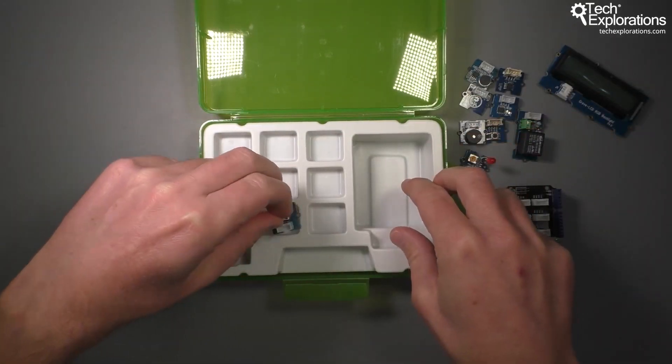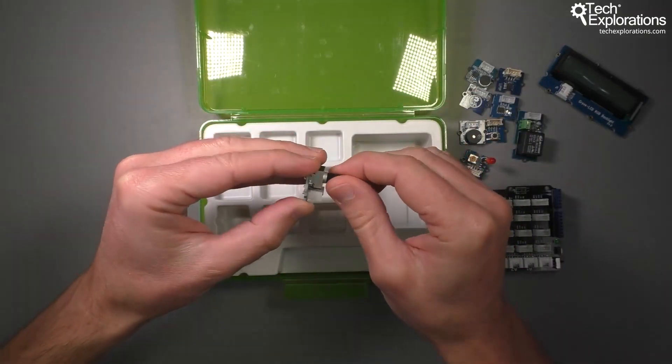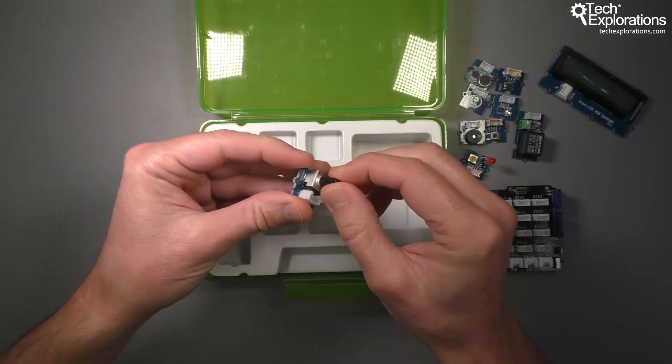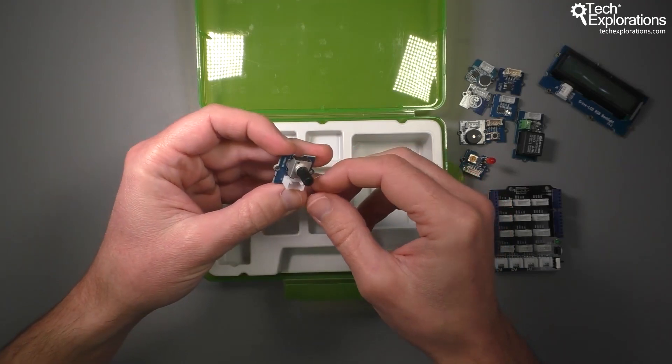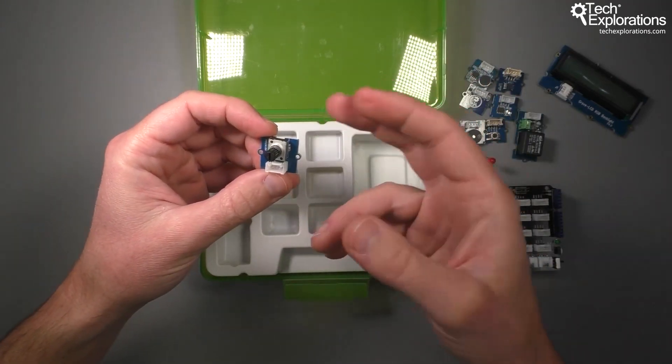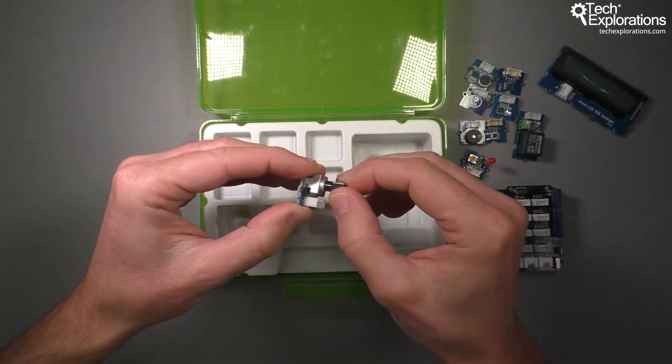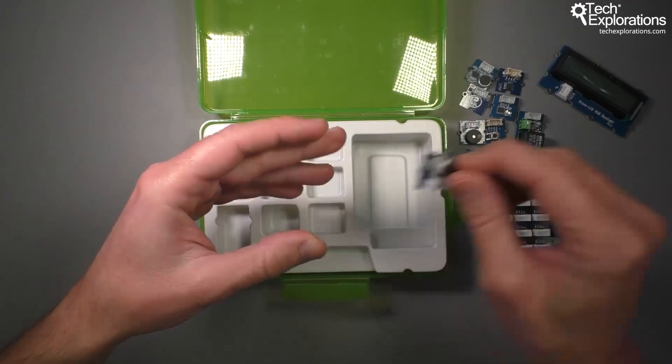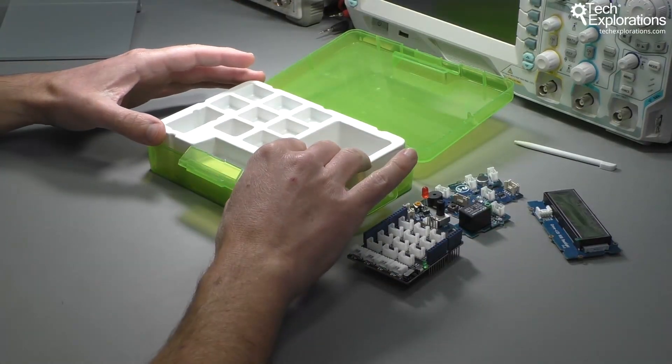Finally for the top layer of our kit we've got a potentiometer. This is an analog device. As we turn the potentiometer we can change the value that the Arduino is reading in its analog input. We're using this in one of our experiments as well a bit later.